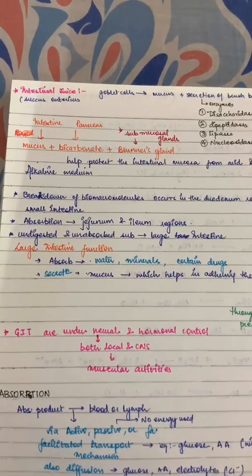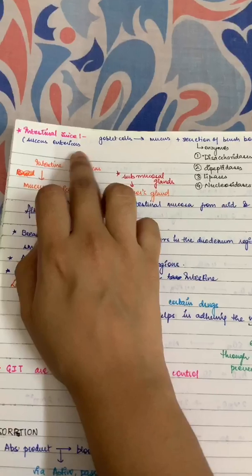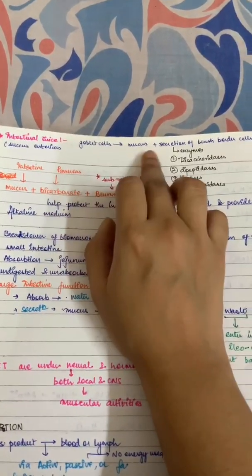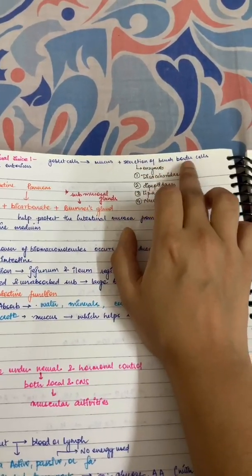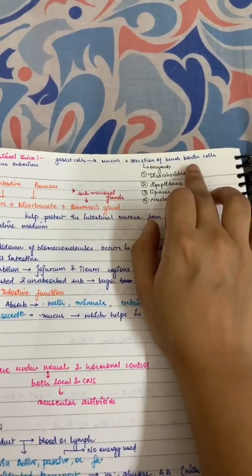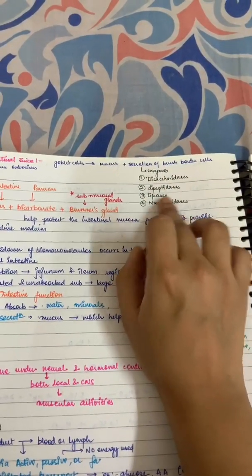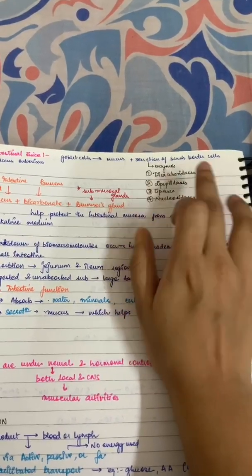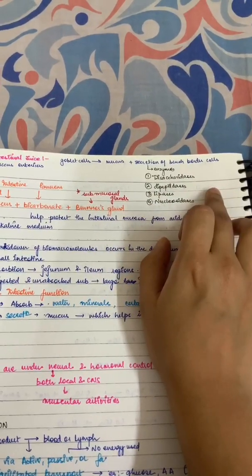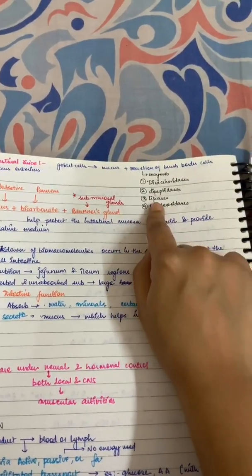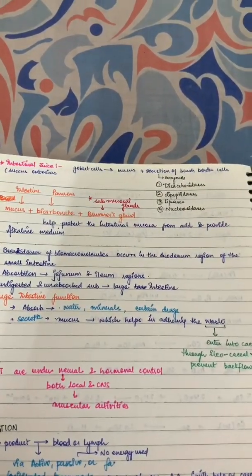Now we come to intestinal juice, which we call succus entericus. The goblet cells secrete mucus. The brush border cells secrete enzymes: disaccharidases, dipeptidases, lipase, and nucleosidases, which act on disaccharides, dipeptides, lipids, and nucleic acids respectively.